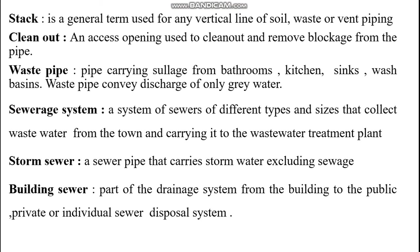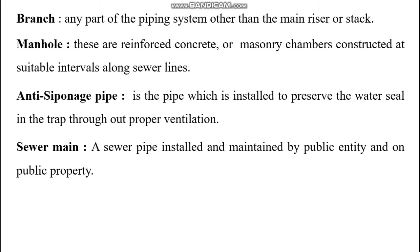Waste pipe is a pipe carrying sewage from bathrooms, kitchen, sinks, and wash basins; it conveys discharge of only gray water. Sewerage system is a system of sewers of different types and sizes that collect wastewater from a town and carry it to the wastewater treatment plant. Storm sewer is a sewer pipe that carries storm water excluding sewage. Building sewer is the part of the drainage system from the building to the public, private, or individual sewer disposal system. Branch is any part of the piping system other than the main ventilation system.